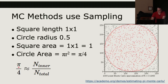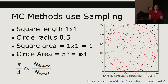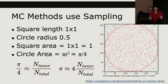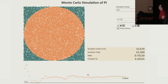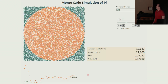So pi is approximately equal to four times the number of points inside the circle divided by the total number of points. If we run this simulation, as we generate more and more points, our value gets closer and closer to pi. It's really cool — you can use this same idea for many other things.